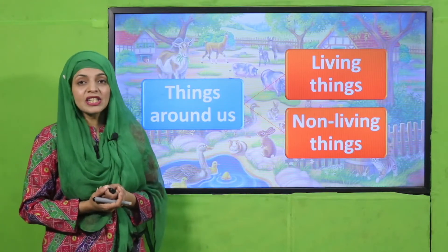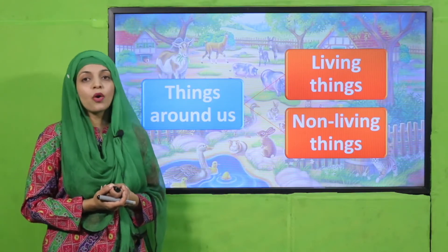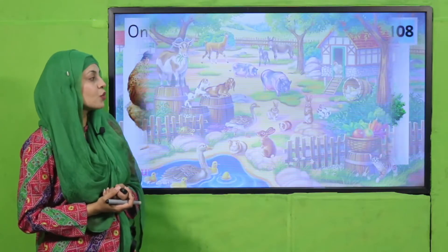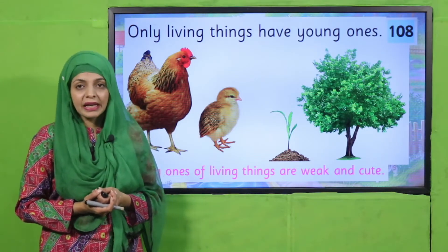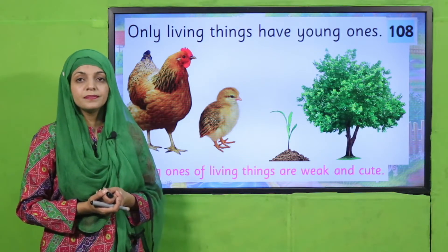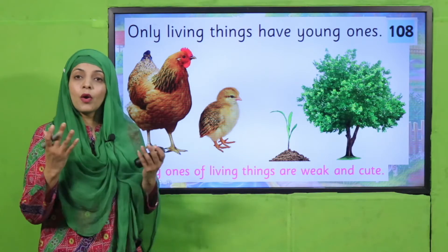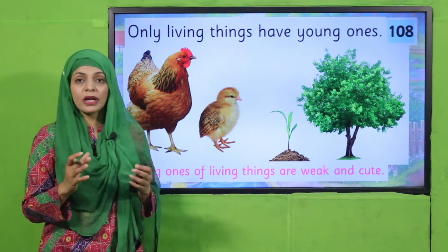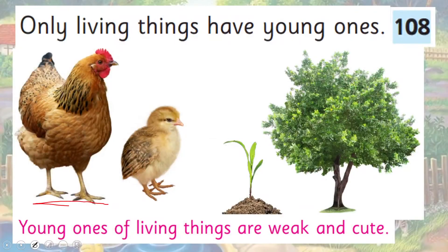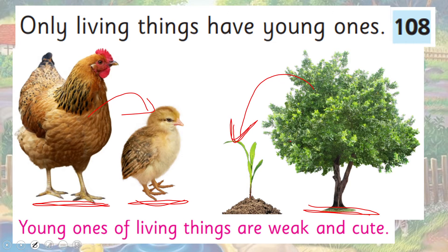Humare idgird kuch cheezein living hoti hain aur kuch non-living hoti hain. Now I request you all to please open page number 108 in your GK1 books. I hope everybody has opened the page. Let's quickly first look at the picture. Here you can see this is a mother hen, and this is the baby of the hen. This is a big tree, and this is a small plant which has grown from its seeds.